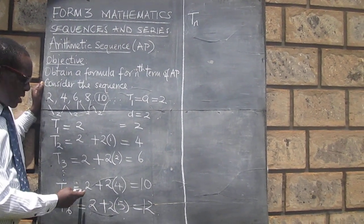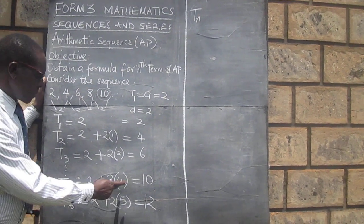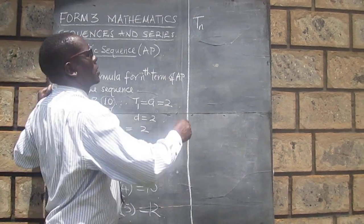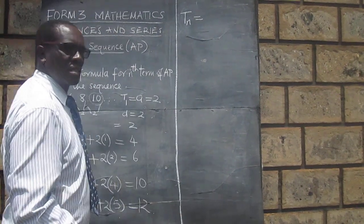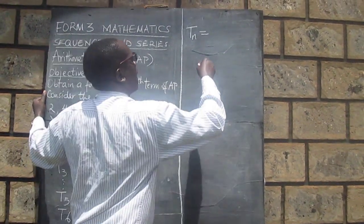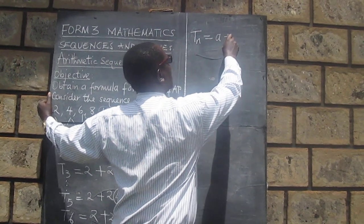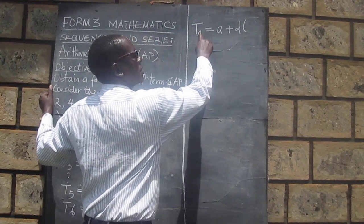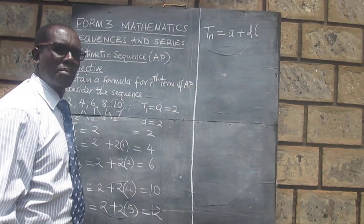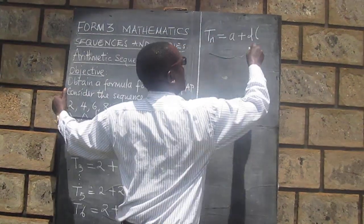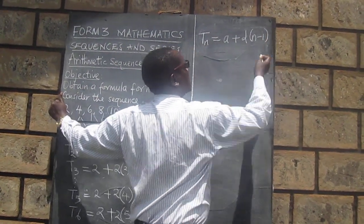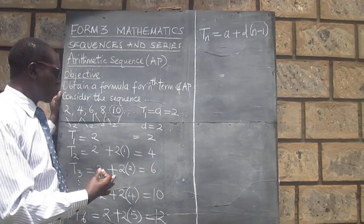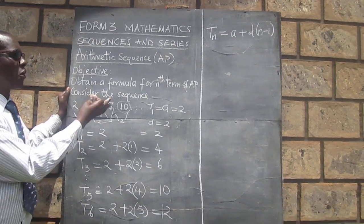The fifth term is the first term plus 5 minus 1 times the common difference. And therefore, whichever term we want, it will be obtained from the first term plus common difference multiplied by the position of the term we want, subtract 1. And therefore, this is the formula that can be used to give us any term of this sequence.